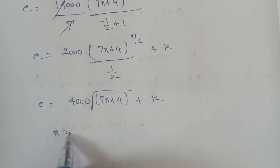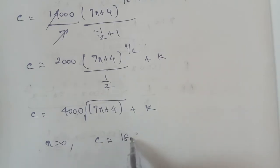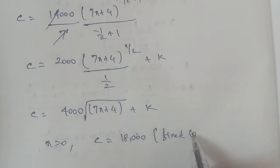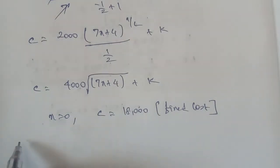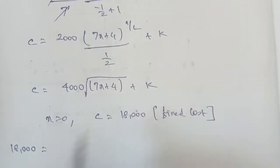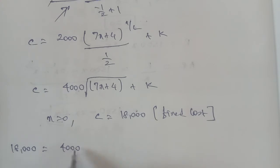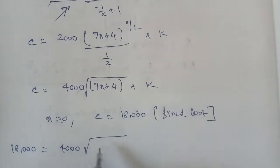Next, applying the fixed cost condition. The fixed cost value is 18,000. When x is equal to 0, C is equal to 18,000. So substituting x equals 0 into the cost function: 18,000 is equal to 4,000 times square root of (7 times 0 plus 4), plus k.